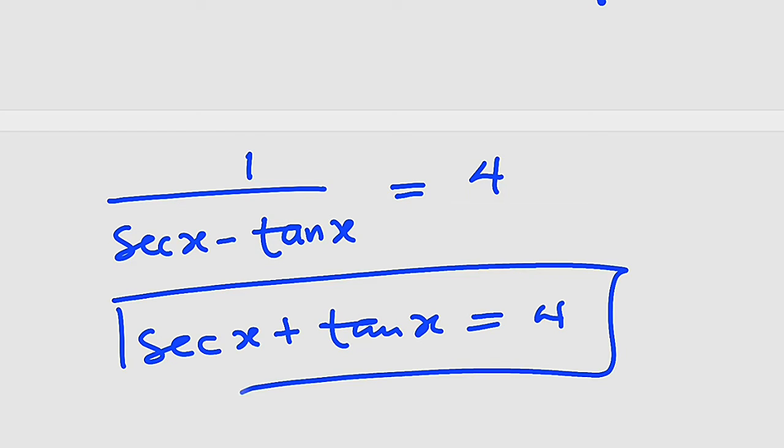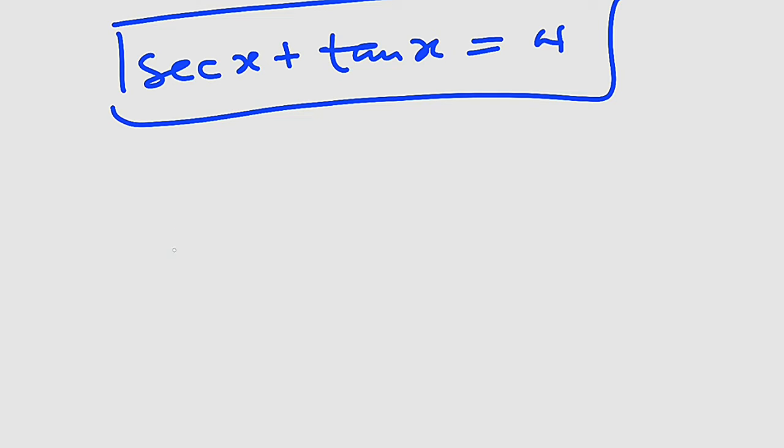Well, let me prove it for you. Remember this famous identity: sine squared x plus cosine squared x equals 1.